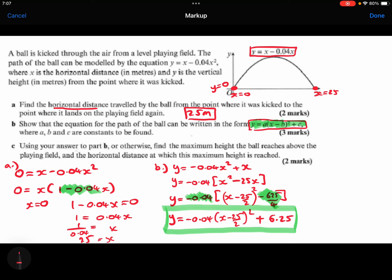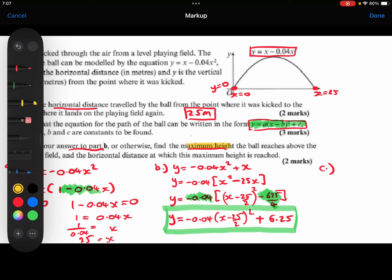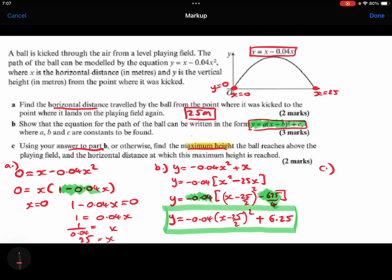And then finally in part c, it says to use our answer from part b to find the maximum height. So we need to find the maximum height, and we also need to find the horizontal distance where the maximum height occurs.